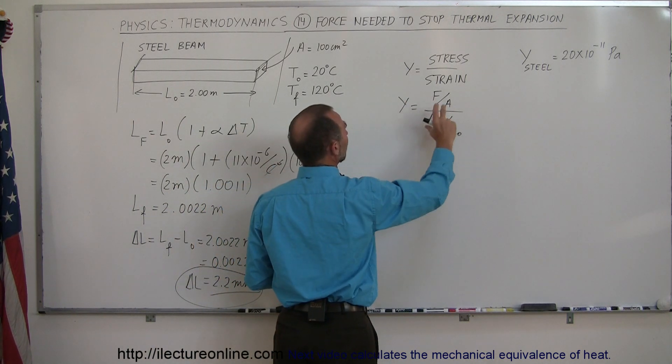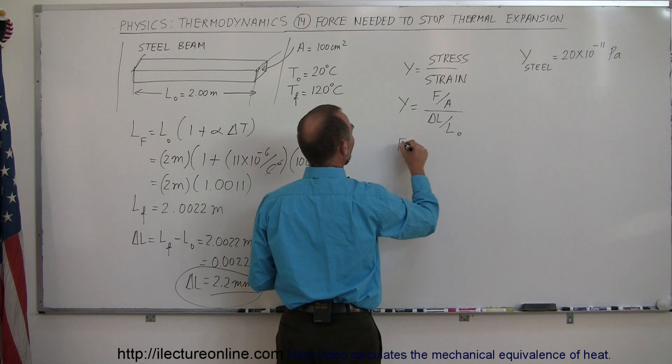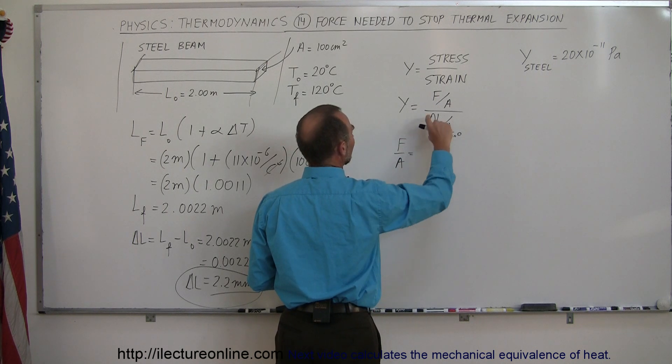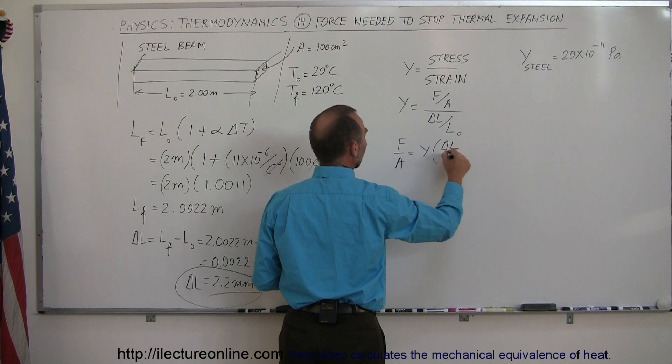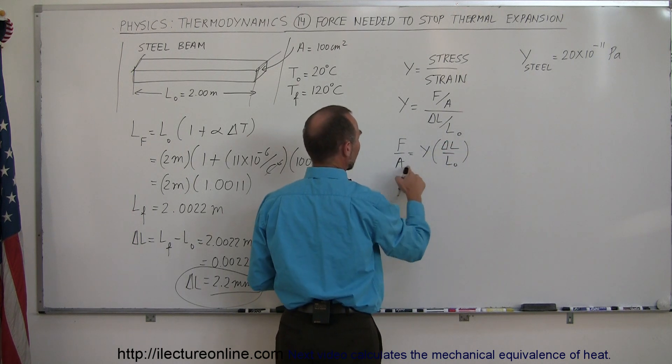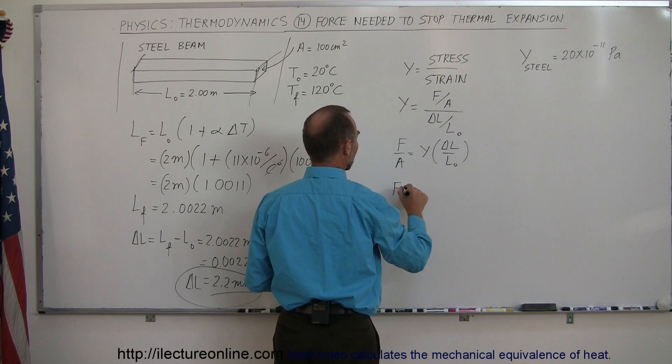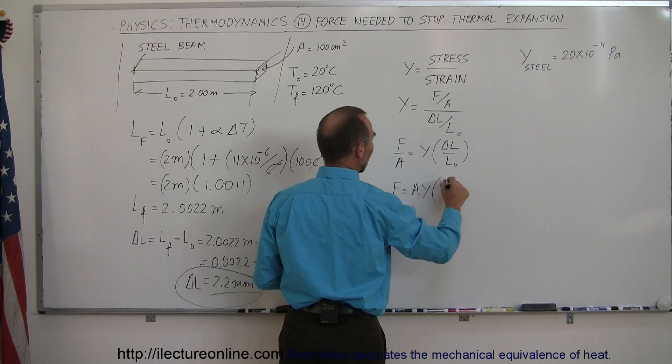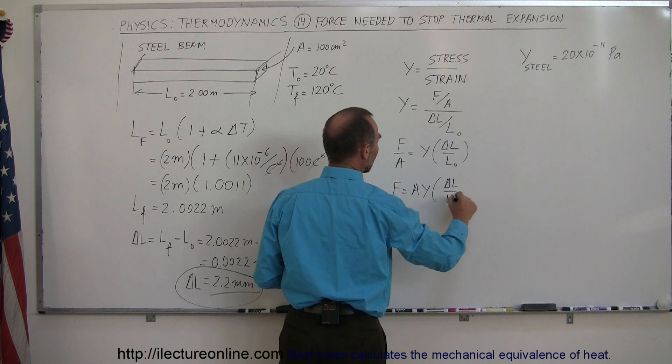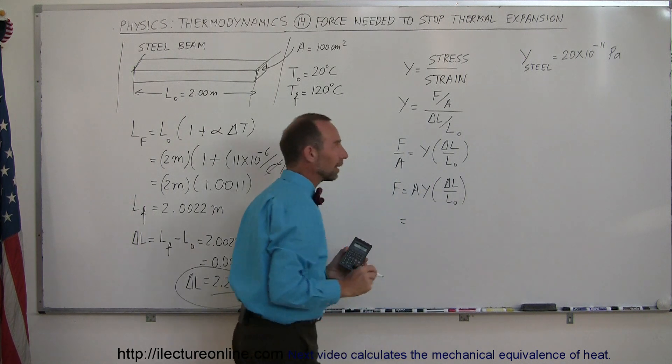Let's cross multiply and switch the equation around. F divided by A equals Young's modulus times delta L over the original length. So the force equals the cross-sectional area times Young's modulus times the ratio of delta L over the original length.